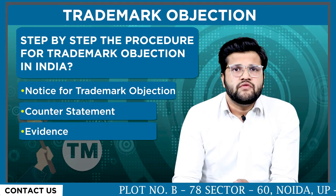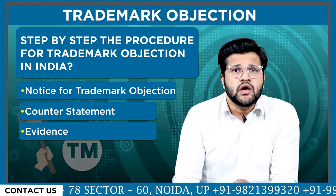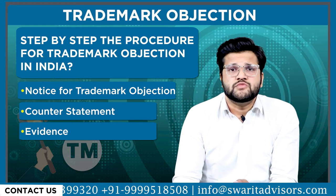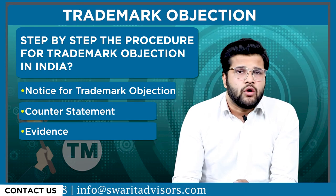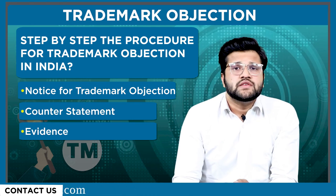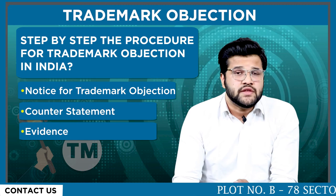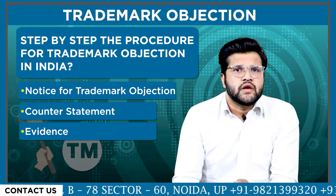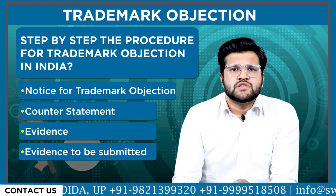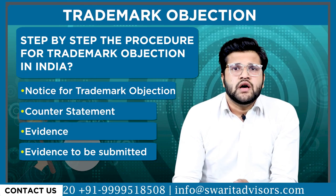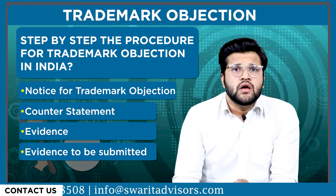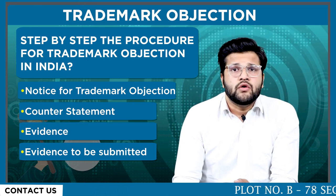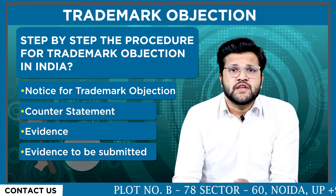The third step is the evidence in favor of objection. The applicant may, by way of an affidavit, file for the evidence in favor of the objection of trademark. The applicant can also write to the registrar of the trademark stating that the applicant does not want to file evidence but instead intends to rely upon the facts stated in the notice for the trademark objection. The fourth step is the evidence to be submitted in favor of reply — the opponent party is provided with a duration of one month, which may extend for a period of another one month, in order to file for evidence in response to the applicant's evidence.